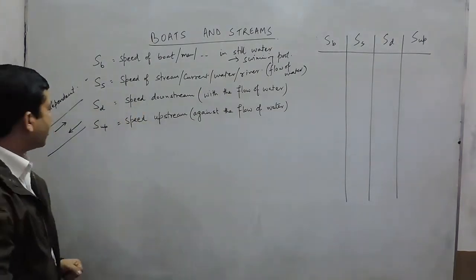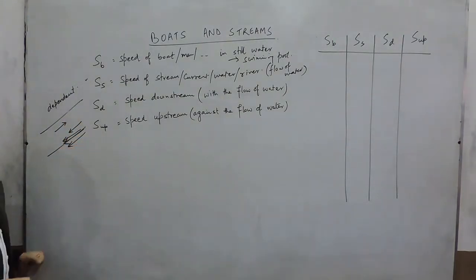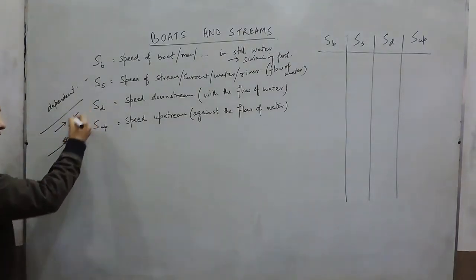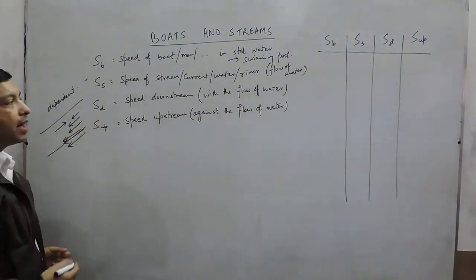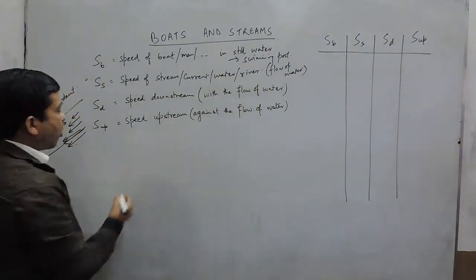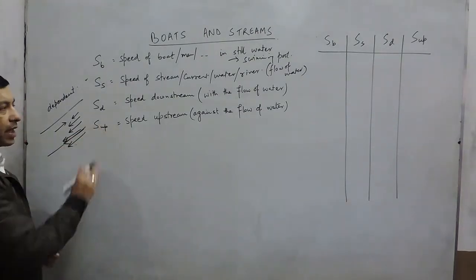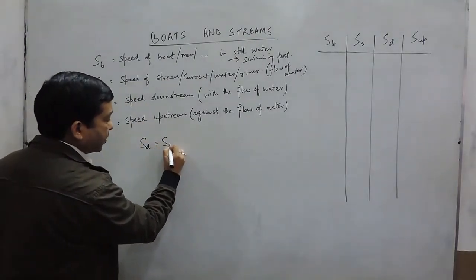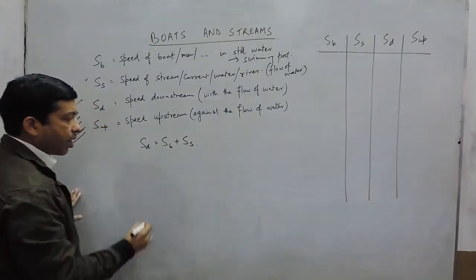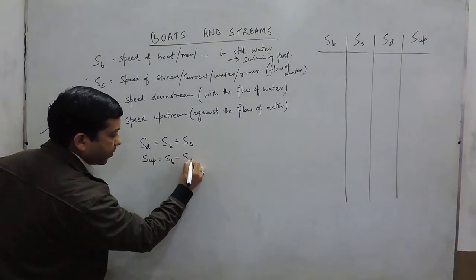The third is speed downstream. When the boat is running in the lower portion, towards the flow of water, its speed is high. The fourth is speed upstream — when the boat goes against the direction of flow, its speed is low. So: speed downstream = speed of boat + speed of stream, and speed upstream = speed of boat − speed of stream.